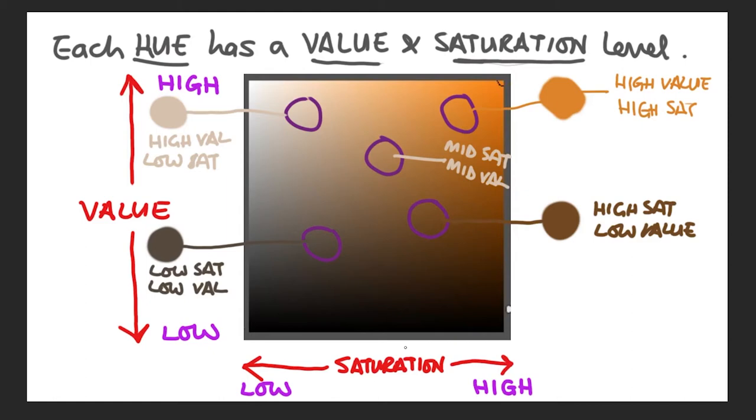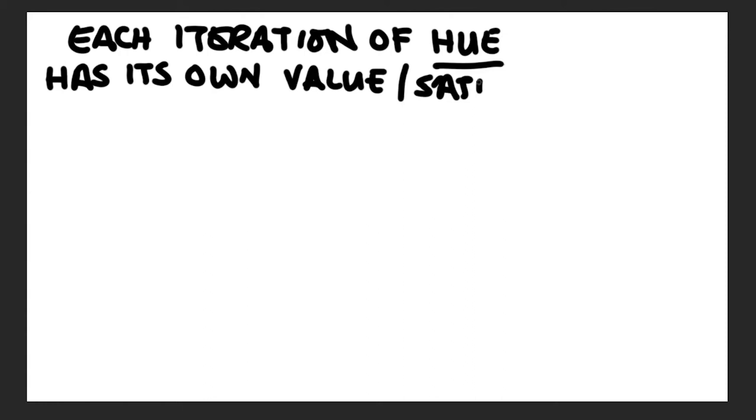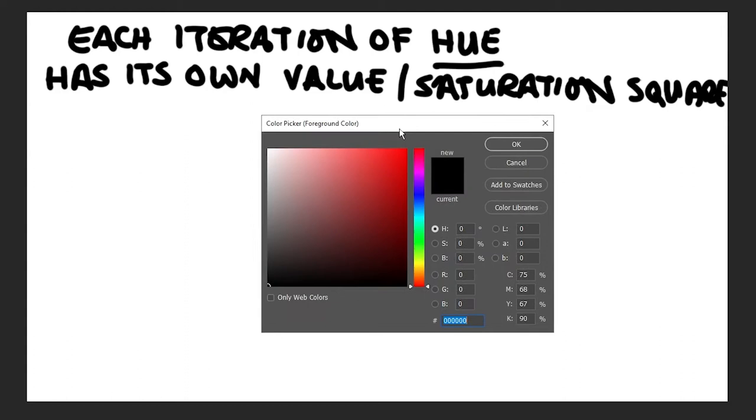So these are typically how you'd analyze and identify and recognize the different colors and properties of them when you're trying to match the colors from a photo reference and painting. Now where it all begins to get a little confusing is that every color or hue will have its own particular value and saturation square. So that's basically every single color of the visible spectrum. So it's almost an infinite amount of colors.